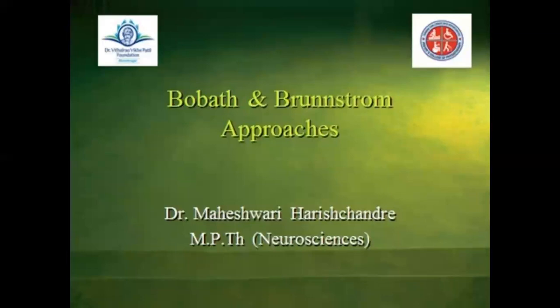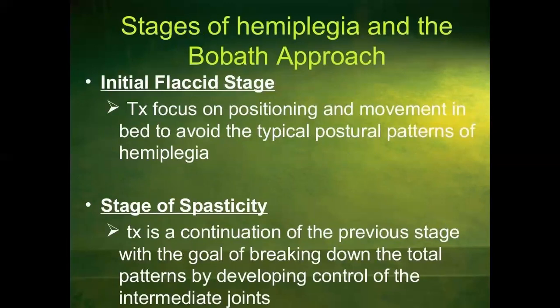This covers the Bobath and Brunstrom approaches. Now we will look at the stages of hemiplegia and the Bobath approach. Initial classic stage: treatment focuses on positioning and movement in bed to avoid the typical postural pattern of hemiplegia. Stage of spasticity: treatment is a continuation of the previous stage with the goal of breaking down the total pattern by developing control of the intermediate joints.